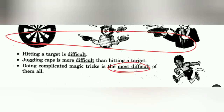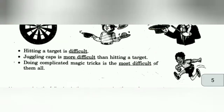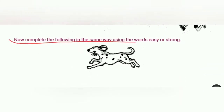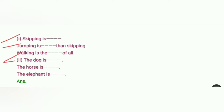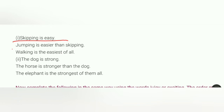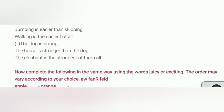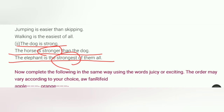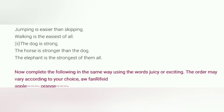Now the fill-ups: complete the following in the same way using the words 'easy' or 'strong'. Skipping is easy. Jumping is easier than skipping — easy के पीछे -er लगा, easier हो गया. Walking is the easiest of all — तीन की बात हो रही है, so -est लगाया, easiest. Second one: The dog is strong. The horse is stronger than the dog — strong के पीछे -er लगाया. The elephant is the strongest of them all — सबकी बात हो रही है, so -est लगाया.